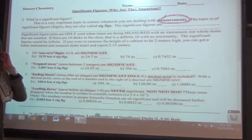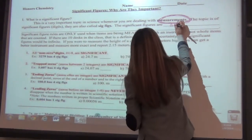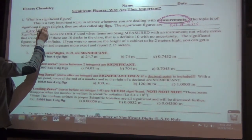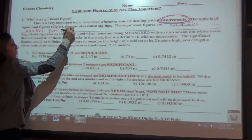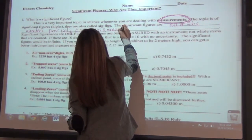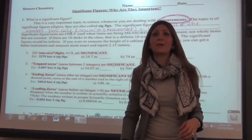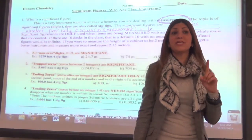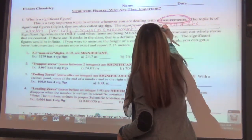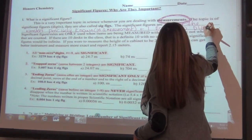The topic is significant figures or significant digits — also called sig figs. Sig figs are all of the numbers or digits precisely known in a measurement, plus ONE — in all caps — estimated number or digit. Let's repeat this together: all of the numbers precisely known plus one estimated digit.